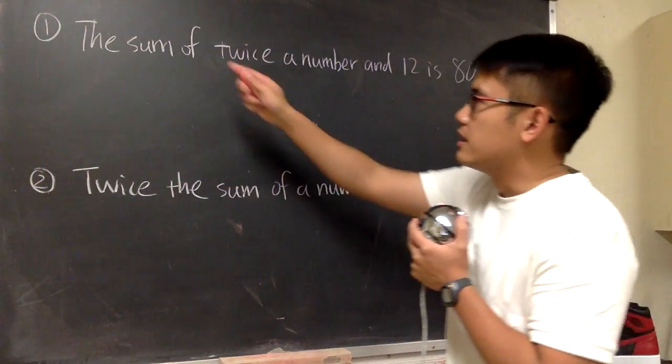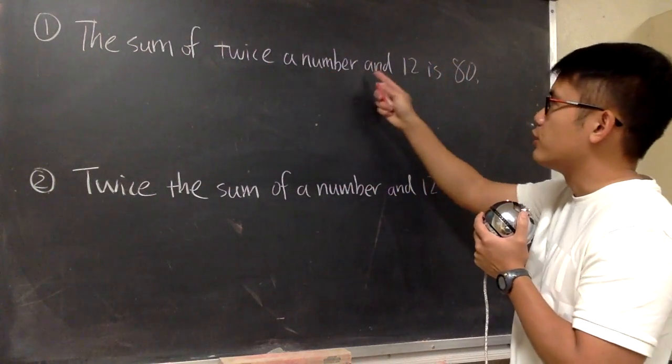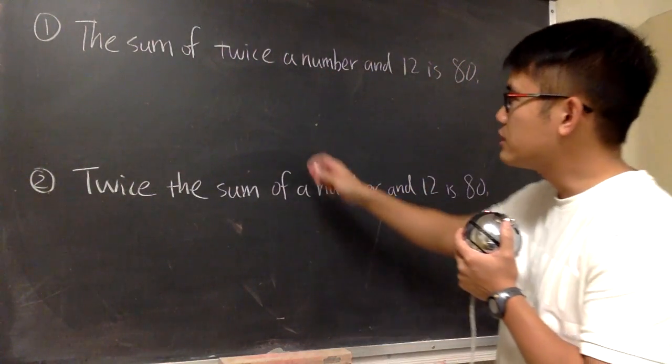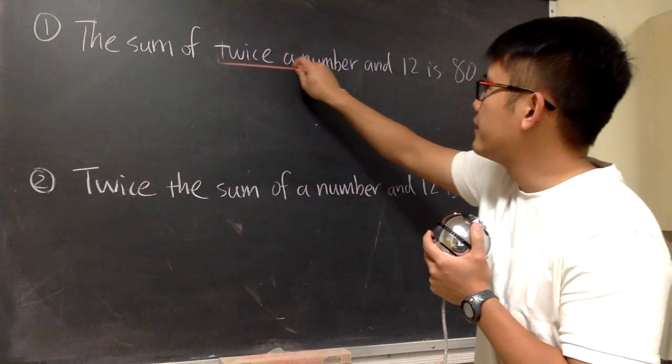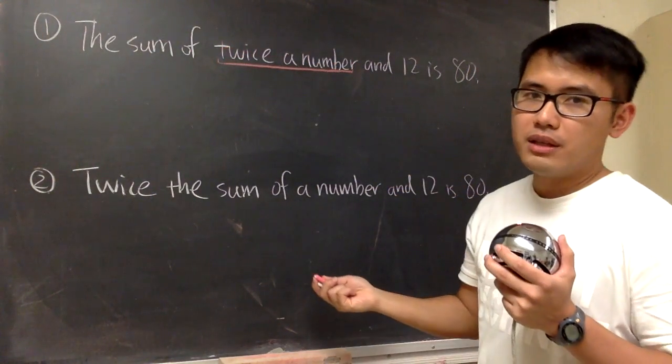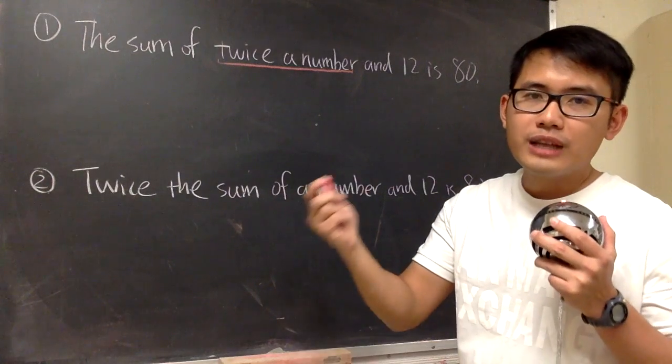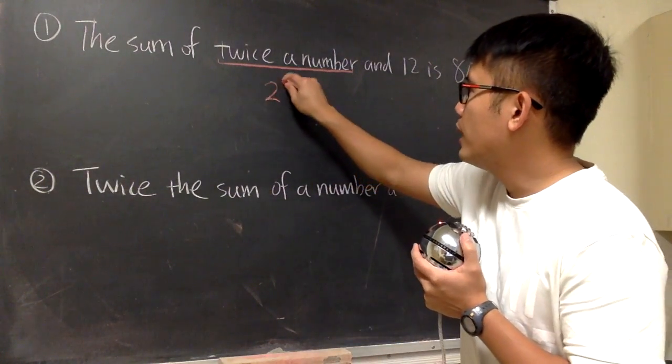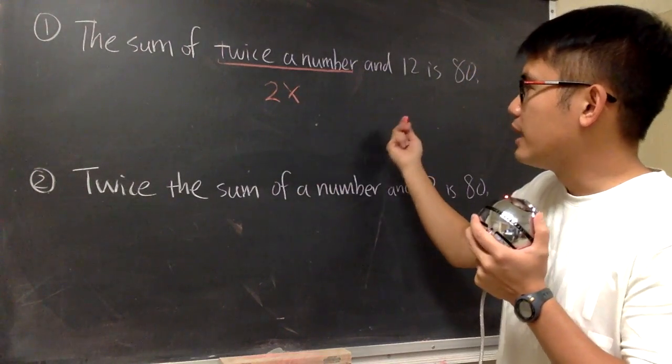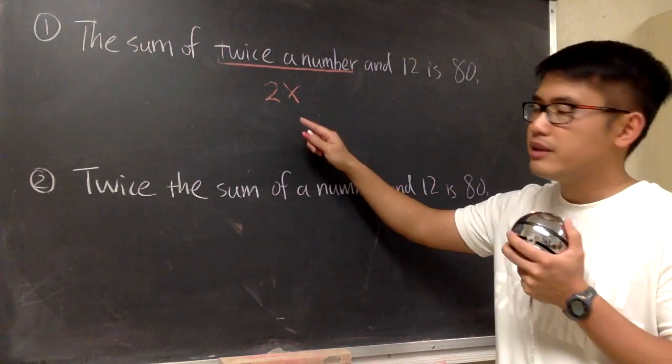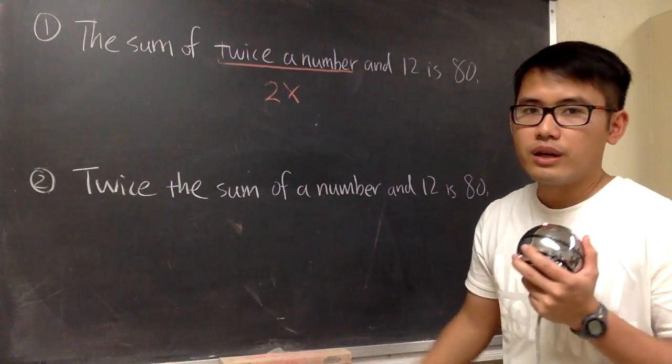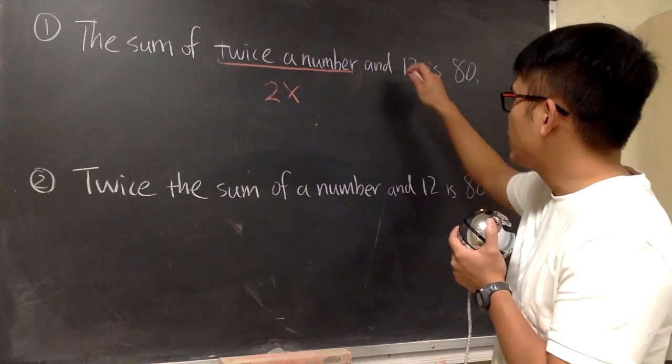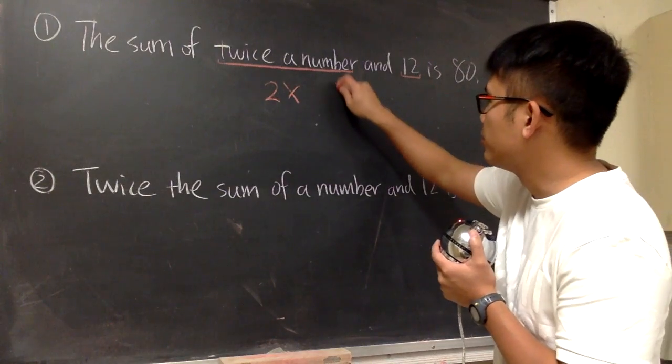So it says the sum of twice the number and 12. We have two things to work with. First of all, it says twice a number. What does that mean? That means two times an unknown number, right? So we can put down 2x. Or, if you would like, you can put down 2n. Doesn't matter, n stands for number. That's okay, too. The other thing that we're working with is the 12. So let's also put down 12.